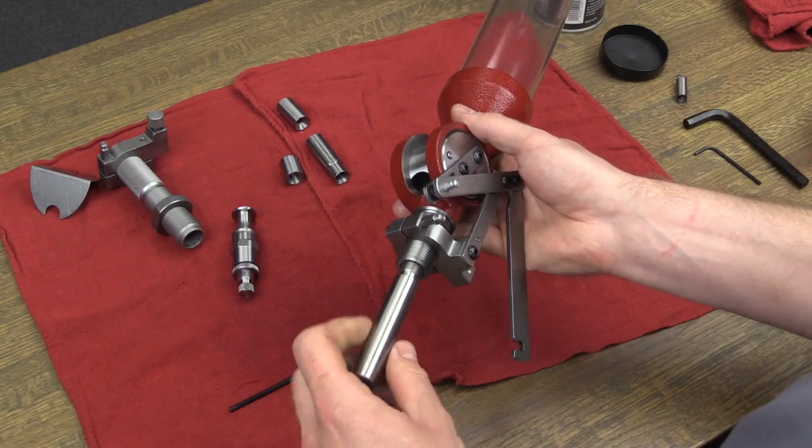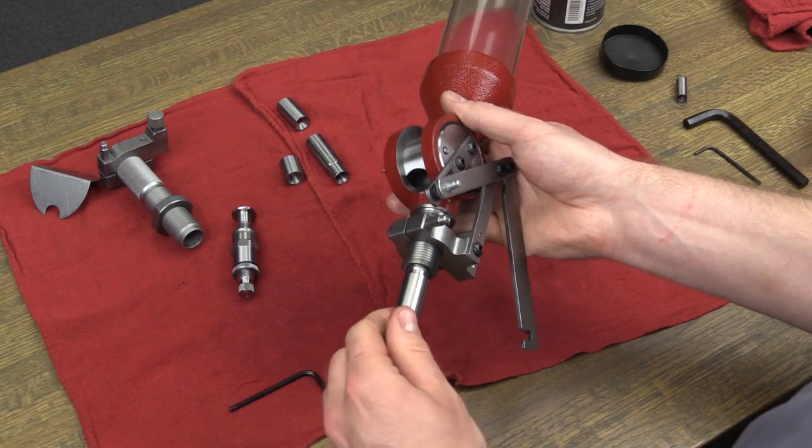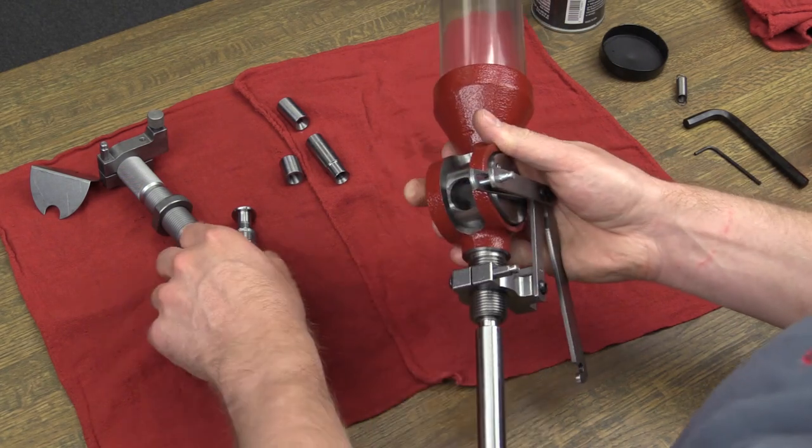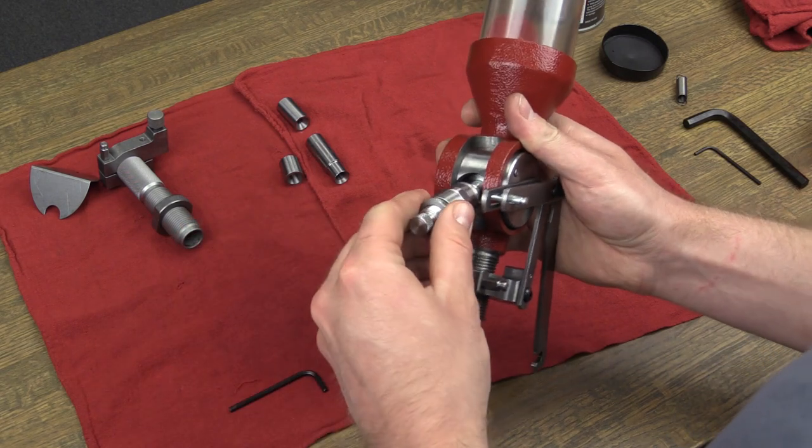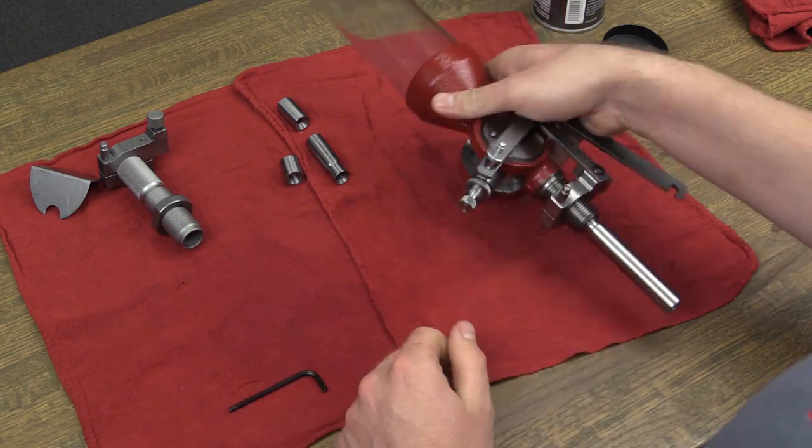Screw in the drop tube into the bottom of the powder measure. Set the rotor perpendicular to the axis of the body. Press the push button and hold it down while inserting the metering unit.